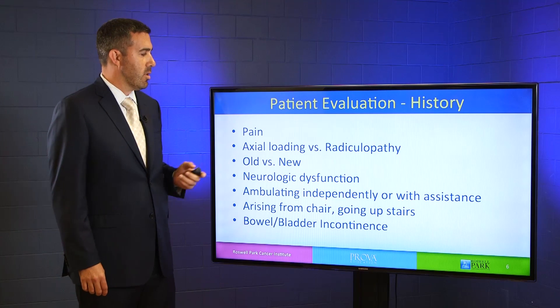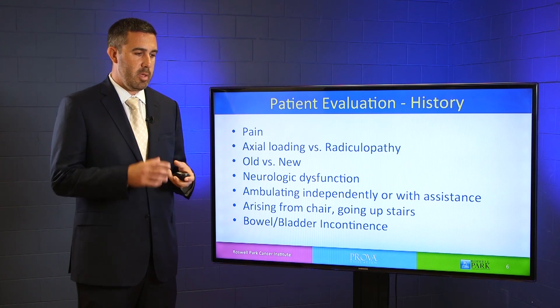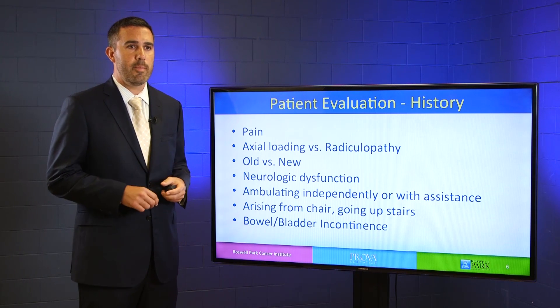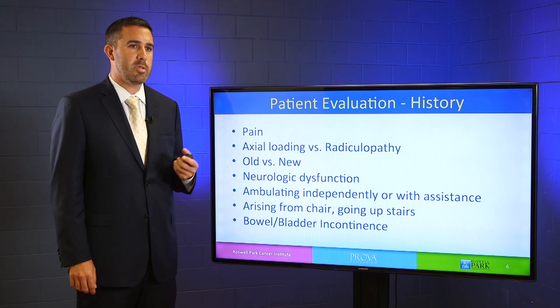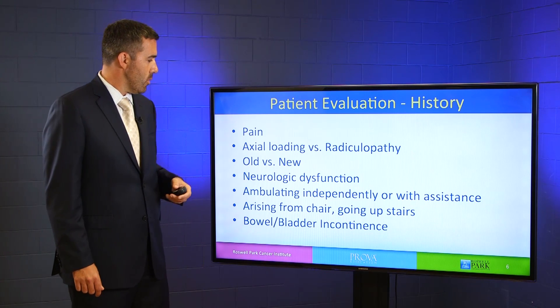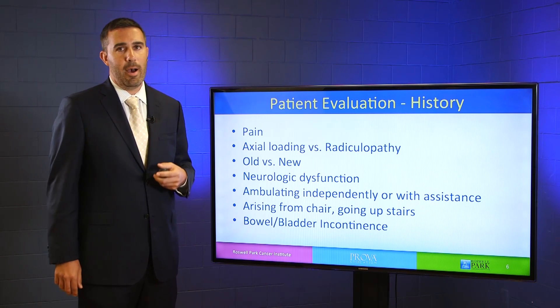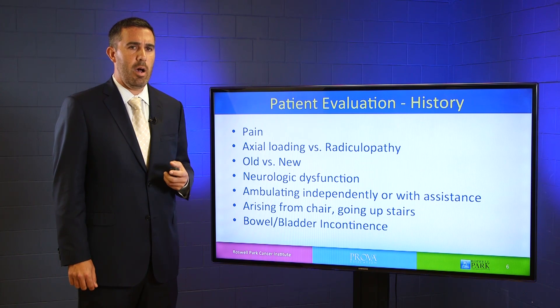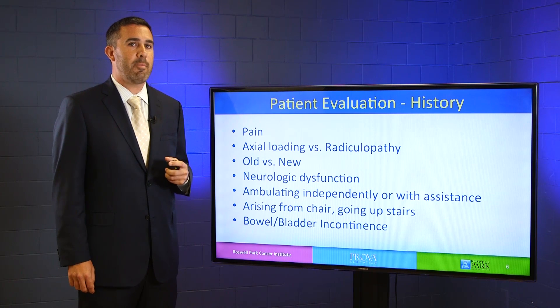You want to differentiate between axial loading type pain and radiculopathy. Axial loading pain is pain that occurs when a patient is upright — if the spine has lost some of its ability to support you, when you stand up against the force of gravity, you'll experience pain in that region. To elicit this, ask whether the patient experiences pain when upright or walking, and whether it improves with recumbency. You also want to ask if this is old or new pain. If a person has had pain for 30 years unchanged, your index of suspicion for spinal metastatic disease is much lower than in a person with no prior history who now has worsening neck pain over the past two months.